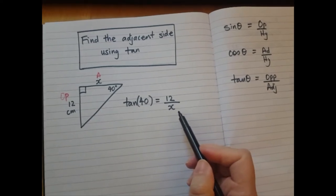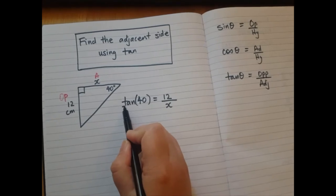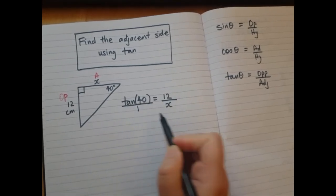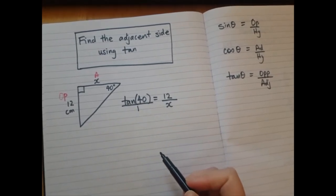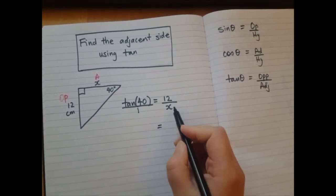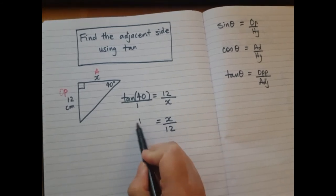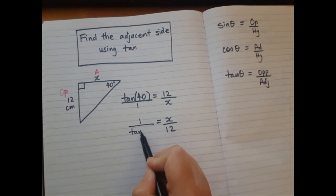So now we want to find what x is. It's on the bottom line of the fraction, so we're going to make the left side a fraction as well. Now turn both these fractions upside down. This becomes x over 12, this becomes 1 over tan 40.